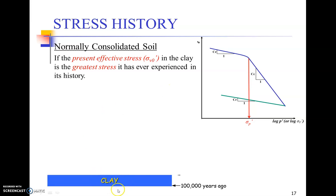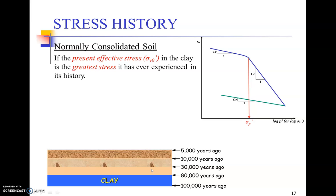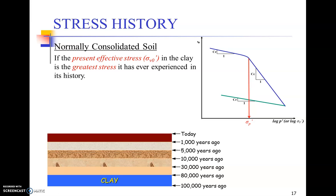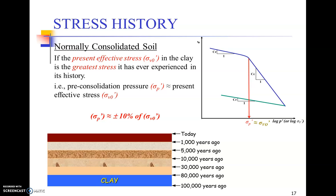Stress history is very important. A normally consolidated soil is a clay deposit that has been progressively loaded by new depositions over hundreds and thousands of years. Every new load is greater than the load the clay has previously experienced — always to the right of sigma-dash-p. All fresh depositions mean the soil is normally consolidated, and with every new load application the soil continues to consolidate further. The pre-consolidation pressure is generally equivalent to or slightly more than the present effective overburden pressure.